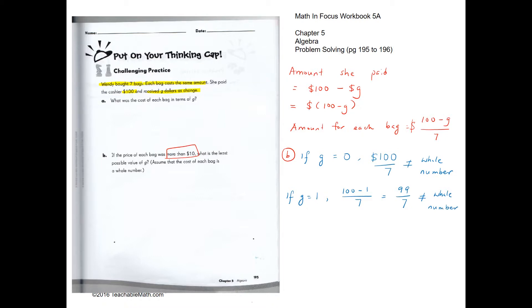Let's try the last one. So in this case, if G equals to two, so the amount that she will spend on each bag would be 98 divided by seven. So what is 98 divided by seven? 98 divided by seven would be 14. So in this case, she'll be spending $14 on each bag. $14 is greater than $10 and $14 is a whole number. So the answer would be G equals to two.